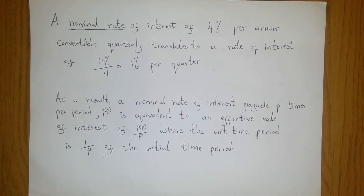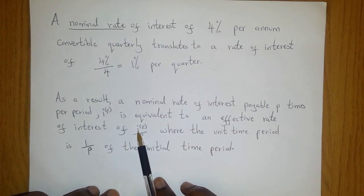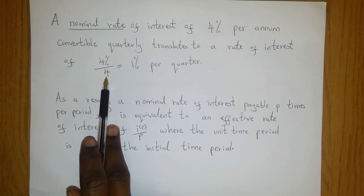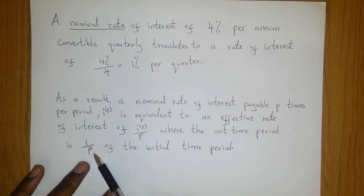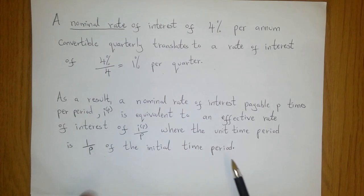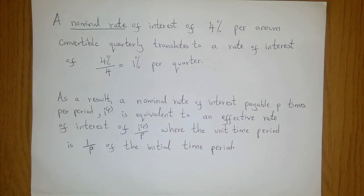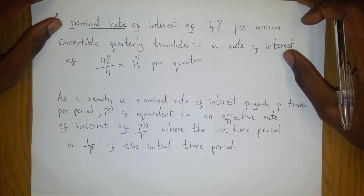A nominal rate of interest payable p times per period, I^(p), is equivalent to an effective rate of interest of I^(p)/p, where you divide the interest by p — the total number of times it is payable. In our case it was 4% divided by 4. The unit time period is 1/p; in our case the unit time period was 1/4 of the initial time period. So for every quarter of the year we can actually treat the 1% as an effective rate of interest if we are looking at a period of a quarter of the year. But if we are looking at the whole year, then the 1%, which adds up to 4% for the whole year, becomes a nominal rate of interest.